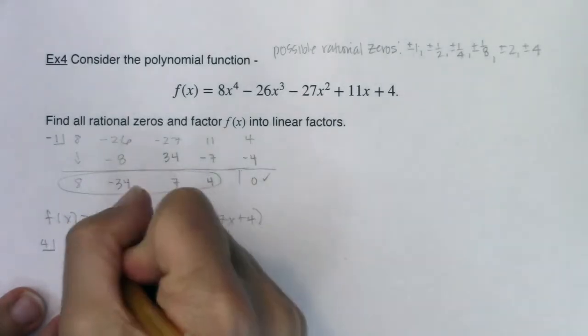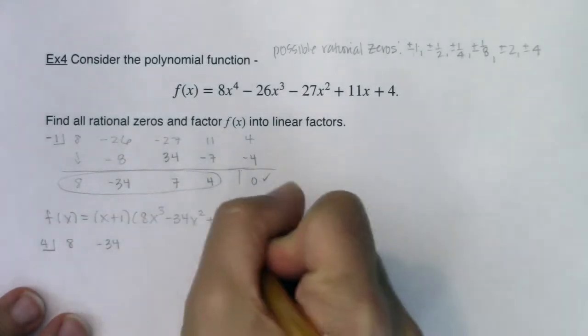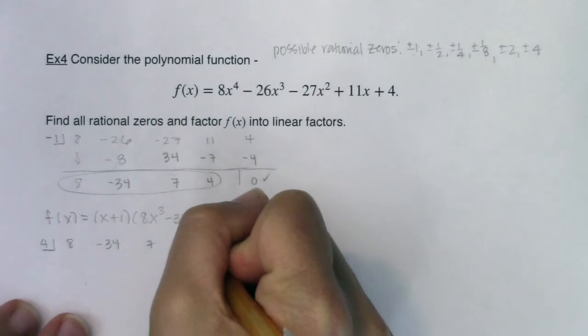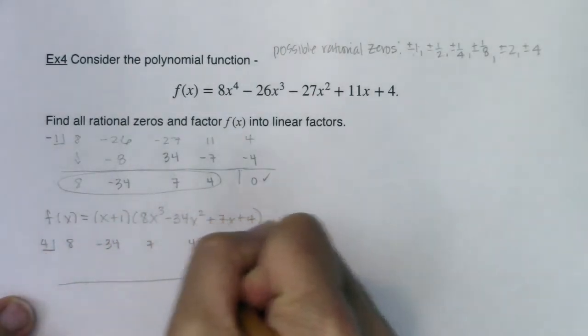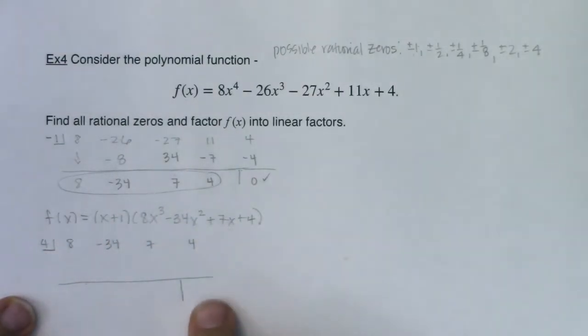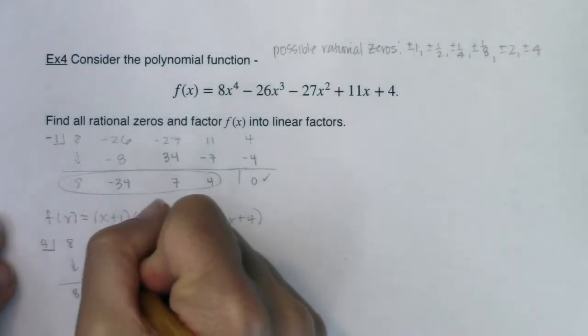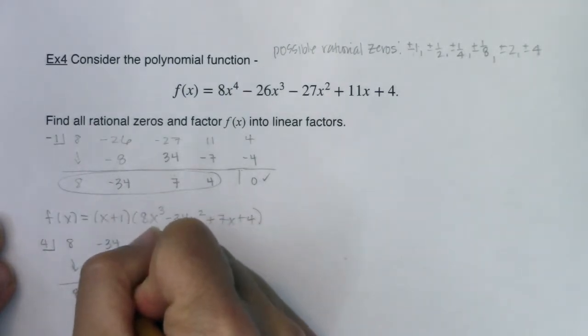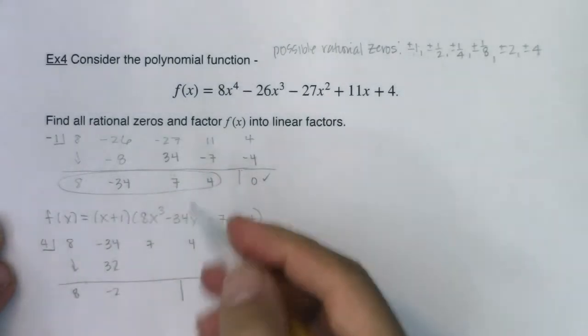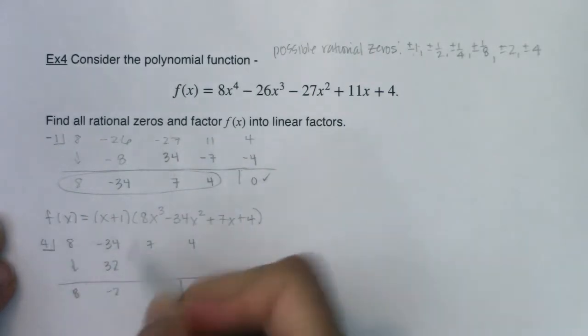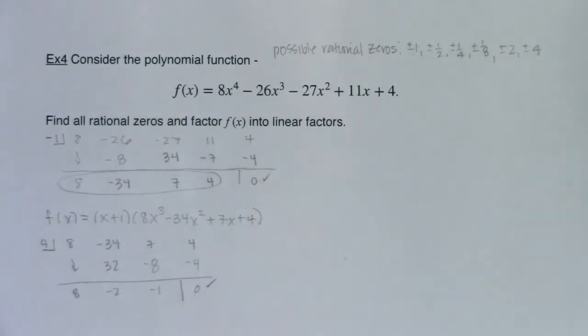So let's go eight, negative 34, seven, four. Let's see what we get here. I'm really hoping for a zero there. That would make me super happy. Four times eight is 32. Negative 34 and positive 32 is negative two. Four times negative two, negative eight, negative one, negative four. Oh my God. Awesome. We got it.